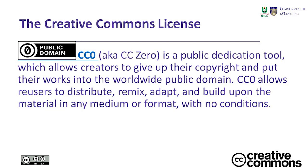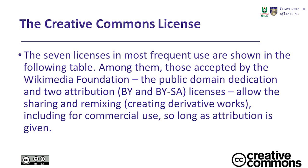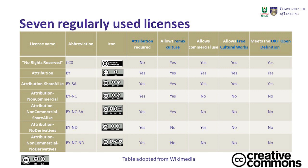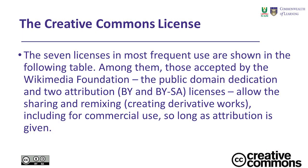The Creative Commons Public Domain Dedication, CC Zero, is a public dedication tool which allows creators to give up their copyrights and put their work into the worldwide public domain. CC Zero allows re-users to distribute, remix, adapt, and build upon the material in any medium or format with no conditions. The seven licenses most frequently used are shown in the following table on your screen. Among them, those accepted by the Wikimedia Foundation — the public domain dedication and two attribution licenses, BY and BY-SA — allow the sharing and remixing, including for commercial use, so long as attribution is given.